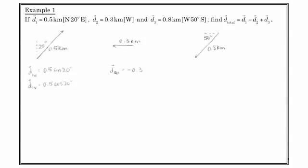So our final vector, then, magnitude of 0.8 kilometers west 50 degrees south has negative 0.8 cos 50 as the horizontal component. And the vertical component, then, is negative 0.8 sin 50.